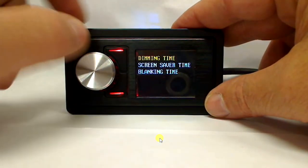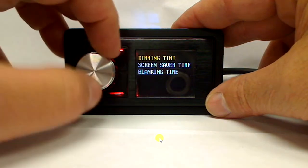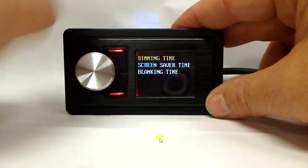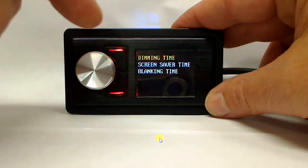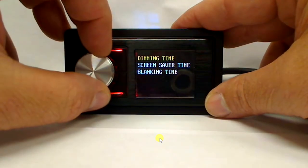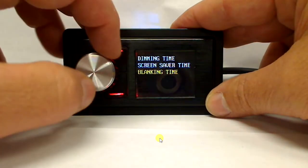Screen saver—we can come back to that scrolling screen and you have dimming time, which is when it dims the screen down. The screen saver time, which is when the screen starts scrolling, and blanking time when it physically turns off the screen.